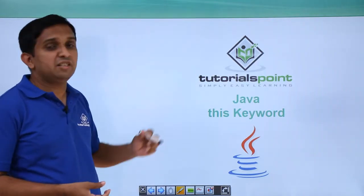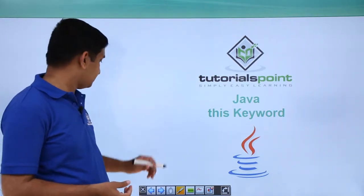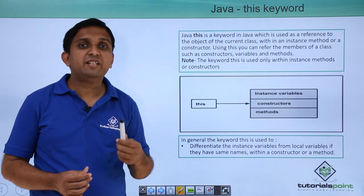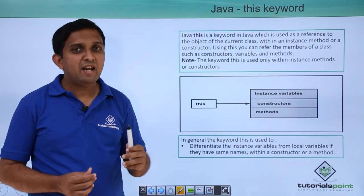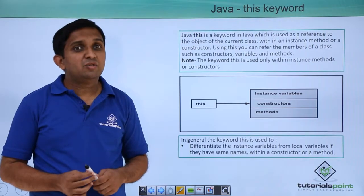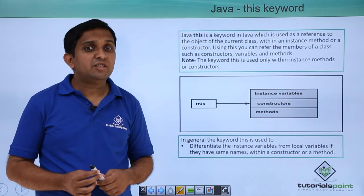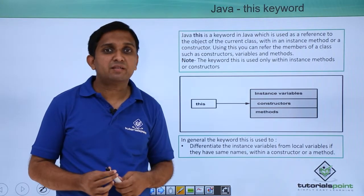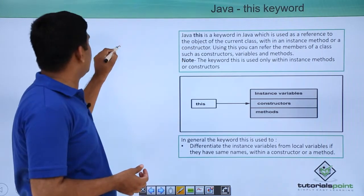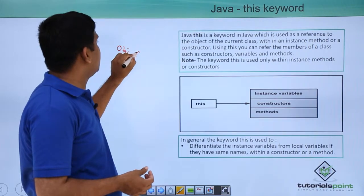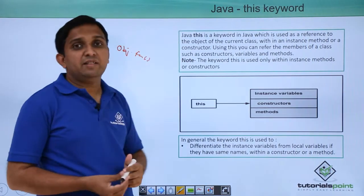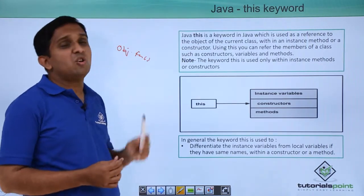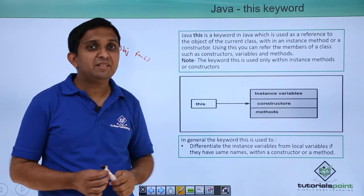We will see the 'this' keyword in Java. 'this' is a reference which is created automatically by the compiler and is used by the compiler. This reference is used to indicate attributes of the method-invoking object. So if I call some method obj.fun, then inside the fun method definition I can refer to the attributes of that obj object using this reference.